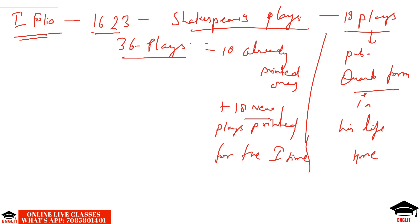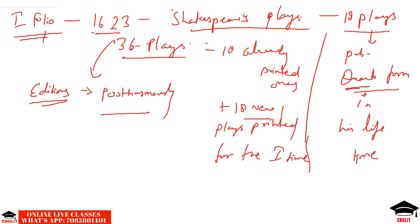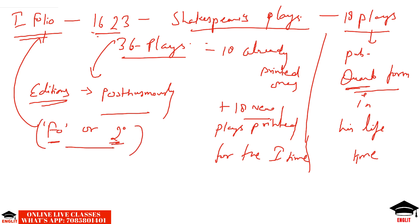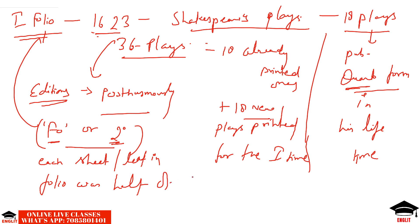The earliest plays of Shakespeare were published either in folio or quarto form. They are also referred to as editions published posthumously after the death of Shakespeare — Shakespeare died in 1616 and this folio came in 1623. The folio is also abbreviated as F or 2° (folio in two degrees), meaning each sheet or leaf is half the size of the original printer's sheet.